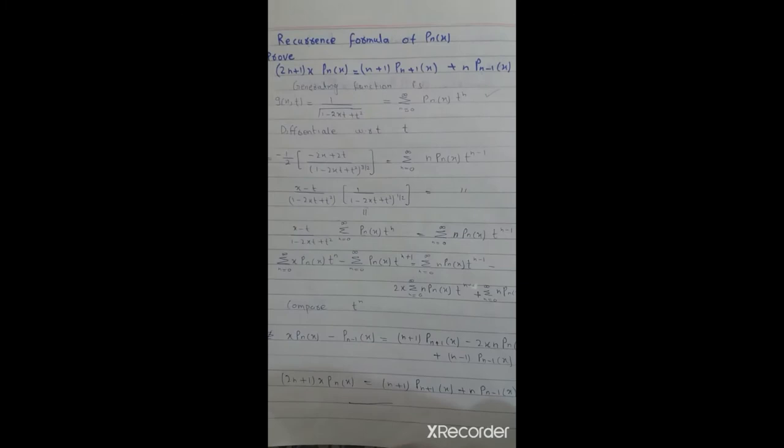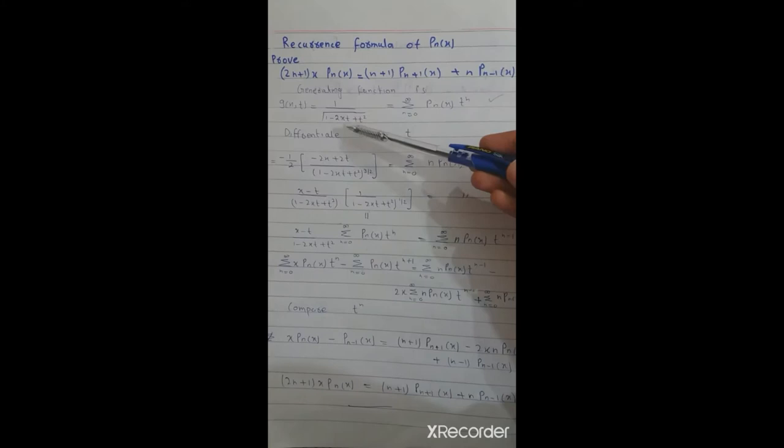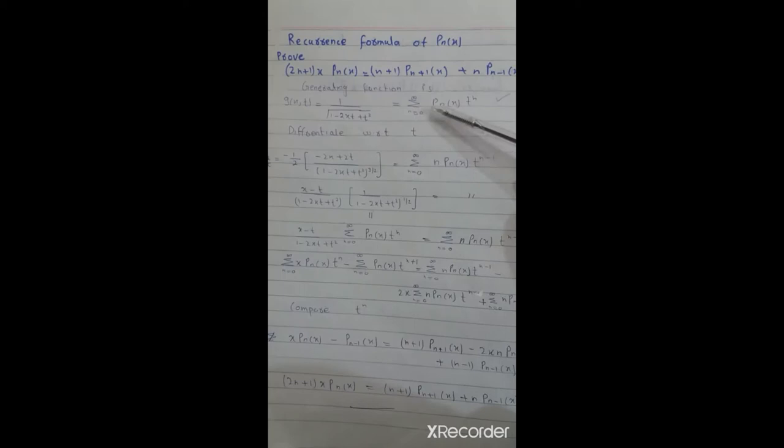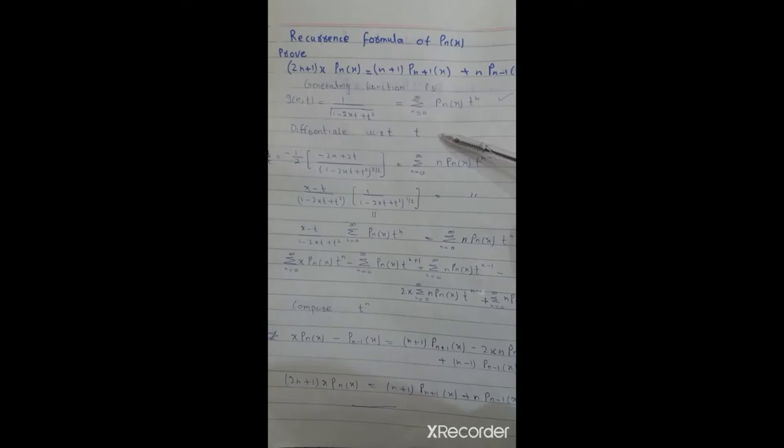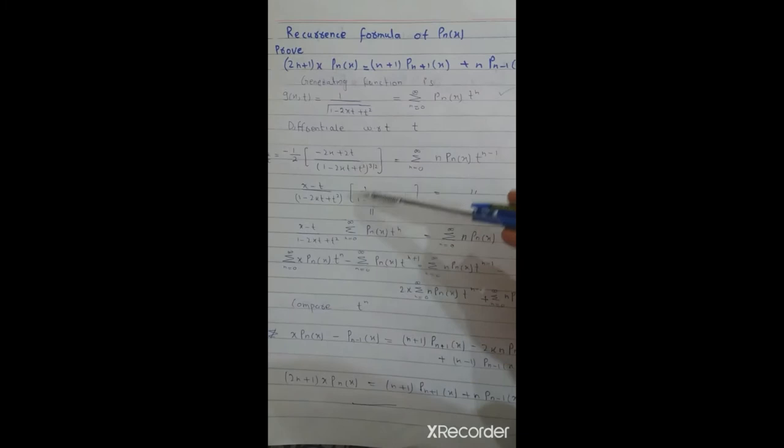Recurrence Relation of Legendre Polynomial: Prove this recurrence relation. We know the generating function of the Legendre polynomial is 1 over square root of (1 minus 2xt plus t squared) is equal to summation Pn(x) times t to the power n. This generating function can be differentiated with respect to t.